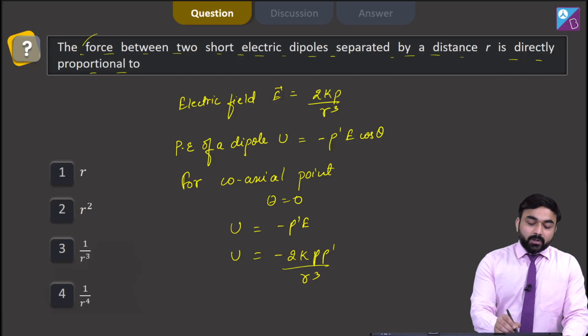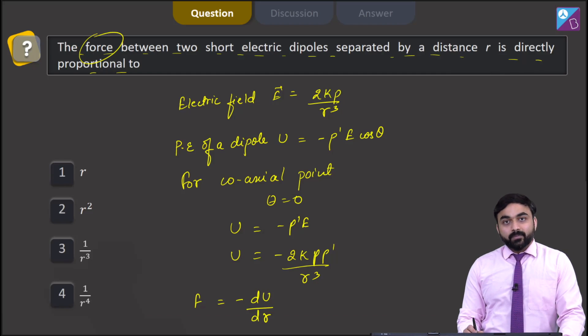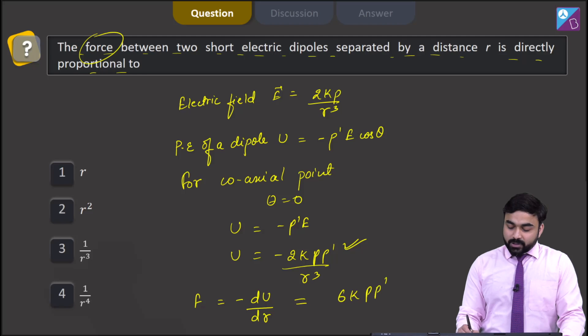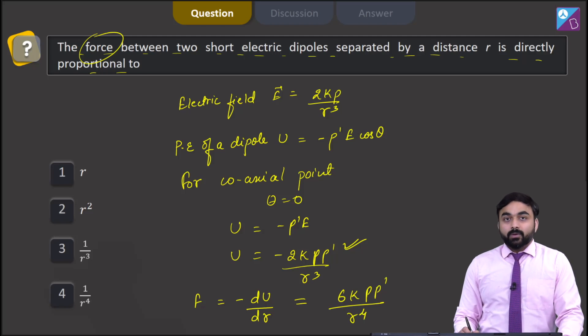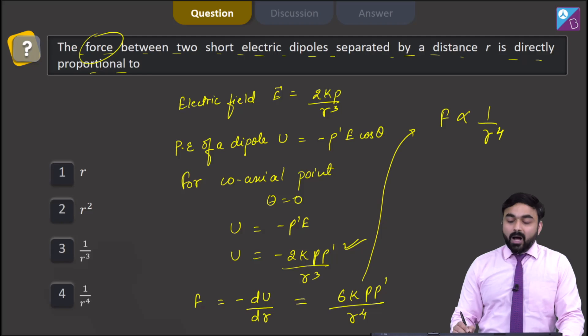We need to calculate force, and the relationship between force and potential energy is given by f equals minus du over dr. If we differentiate this particular term with respect to r, we will have force to be equal to 6k p p dash over r to the power 4. So from here, force is directly proportional to 1 over r to the power 4.